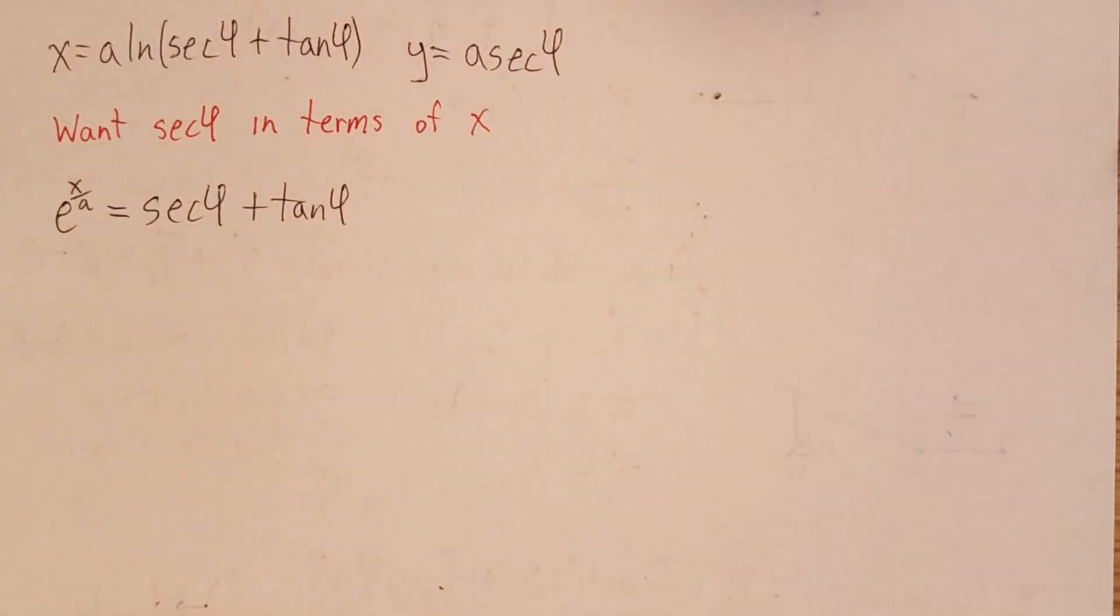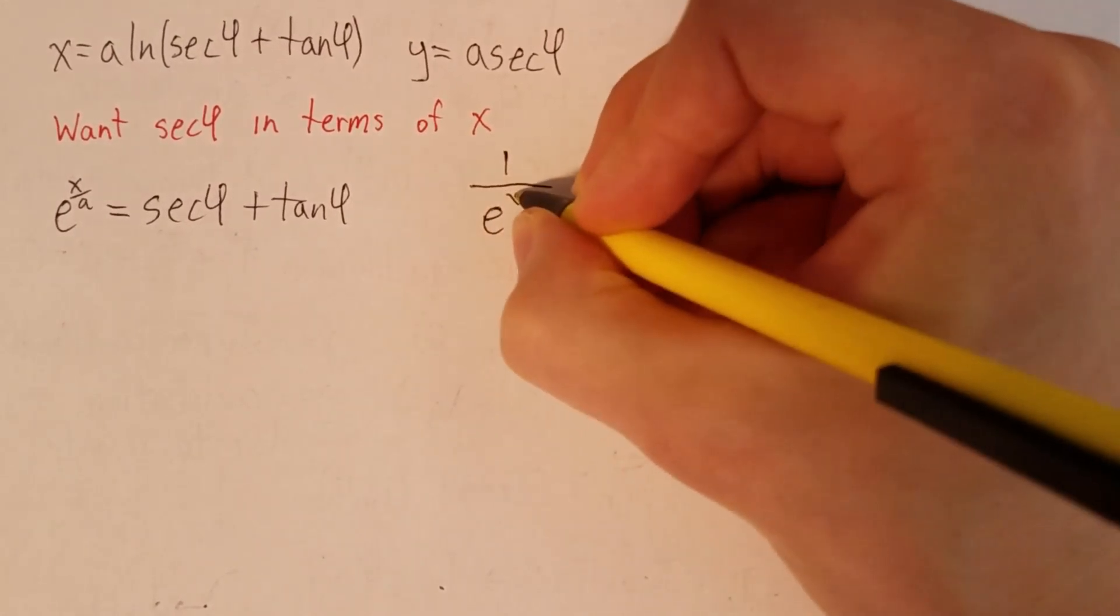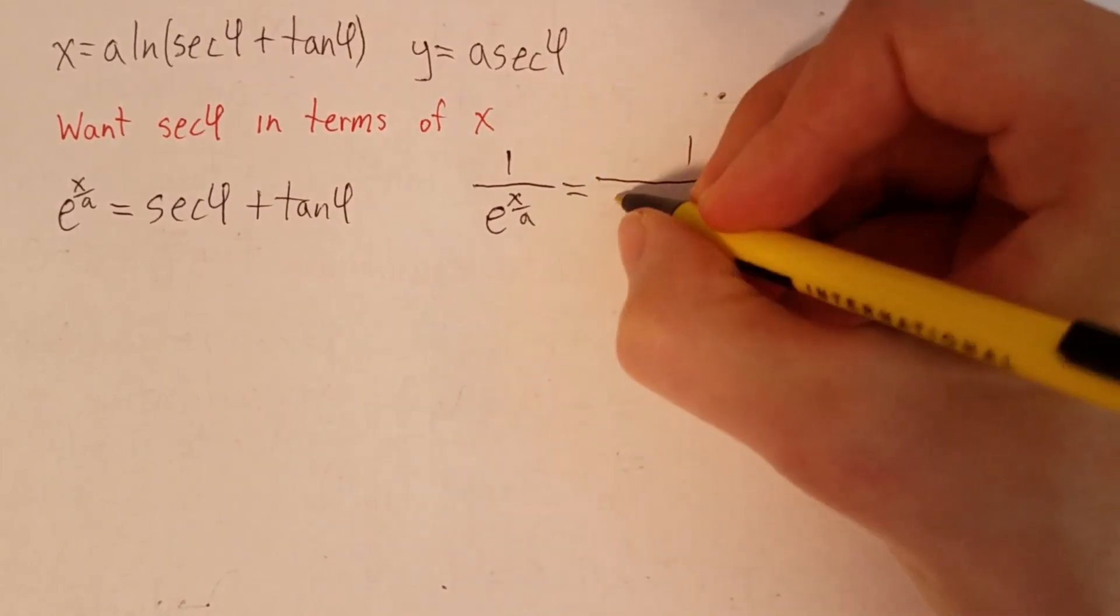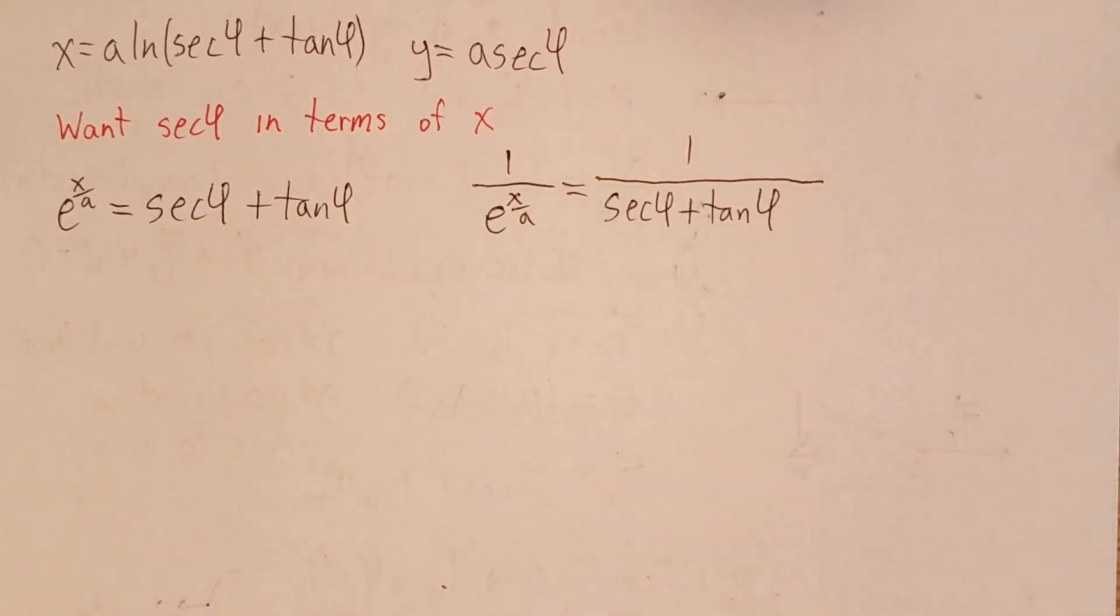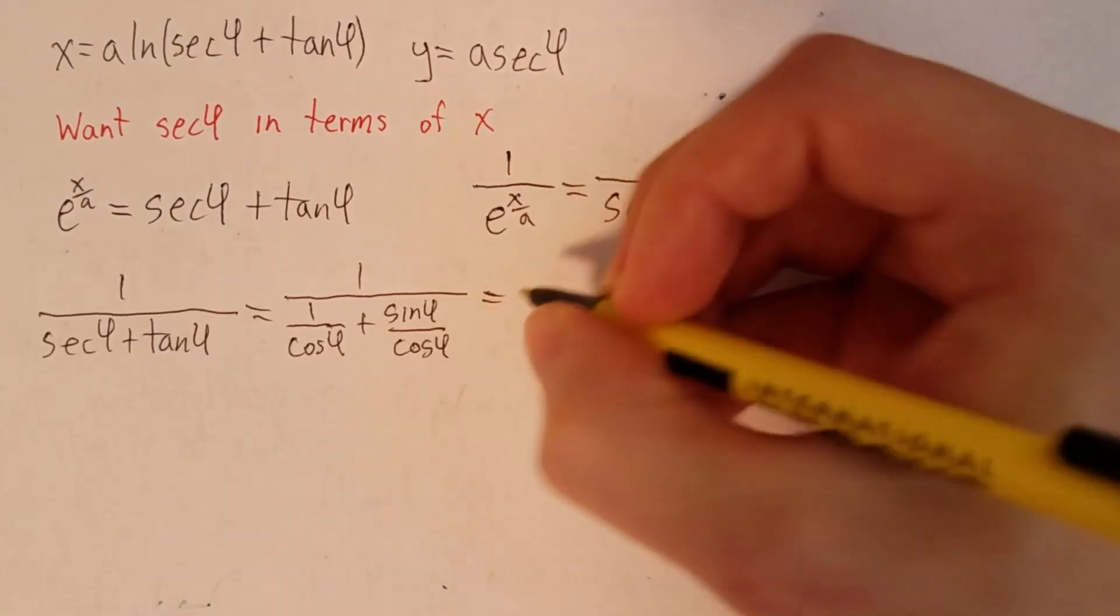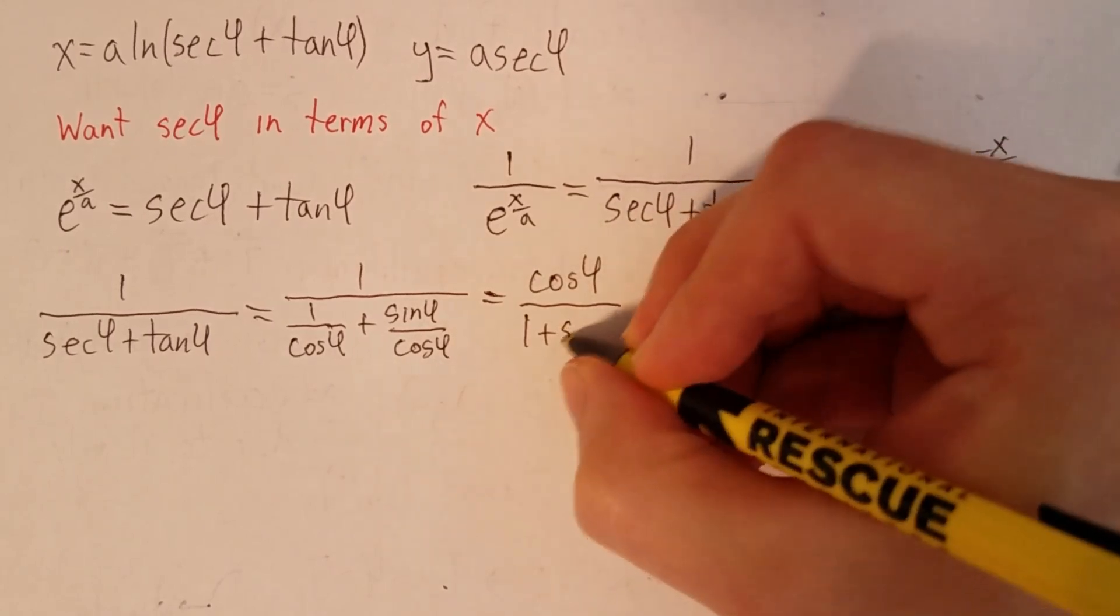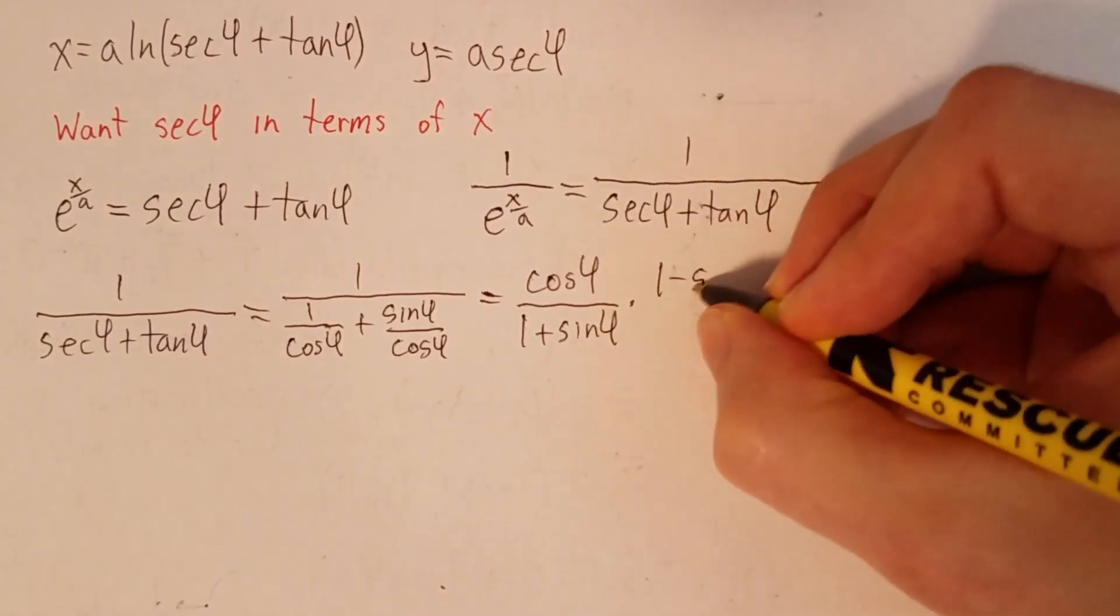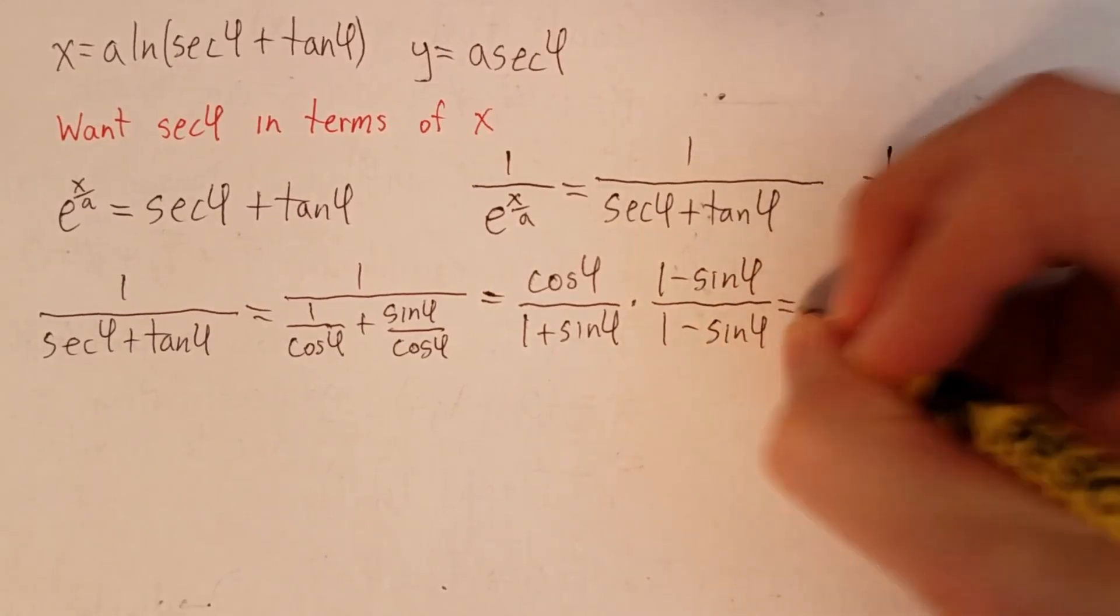Now, we would like to get another equation out of this in order to eliminate tangent φ. And it turns out that a good way to do that will be to take the multiplicative inverses. Now, 1 over e to the x/a is e to the minus x/a. But it's not as clear what we get for 1 over secant φ plus tangent φ. So let's take a look at that. Writing it in terms of sine and cosine, we see there's this cosine that can go up on top. And then we multiply by 1 in the form of 1 minus sine φ over 1 minus sine φ.